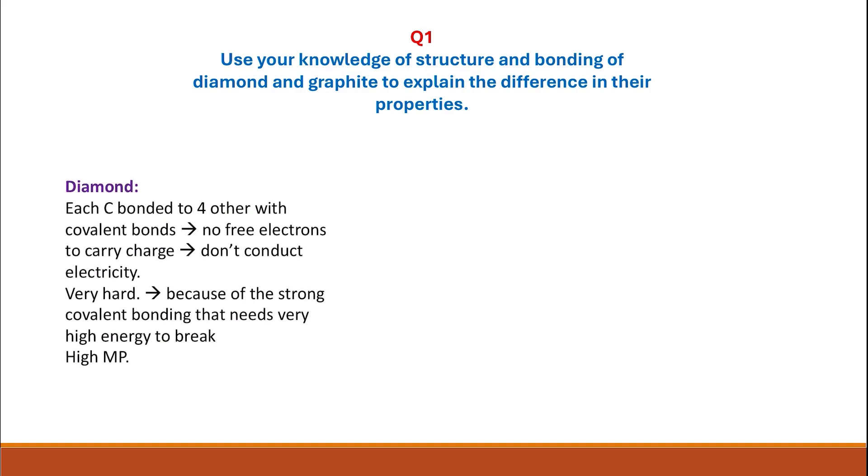You need to talk about structure and bonding. For diamond, each carbon atom is bonded to four others with covalent bonds, so there are no free electrons to carry charge and they do not conduct electricity. They are very hard and have high melting point because of the strong covalent bonding that needs very high energy to break.